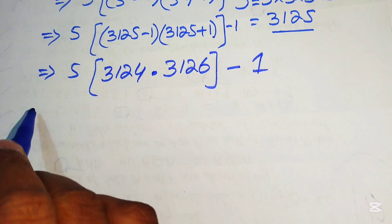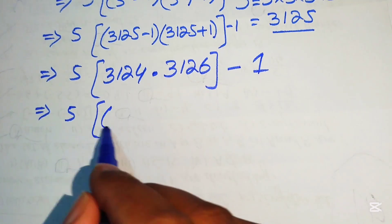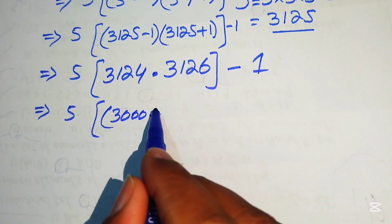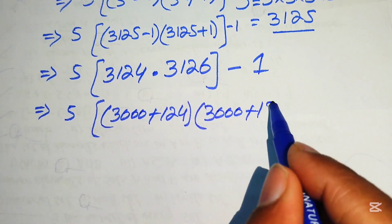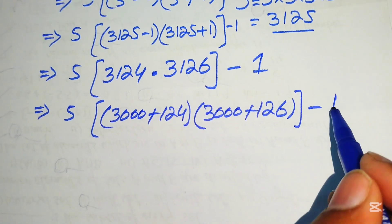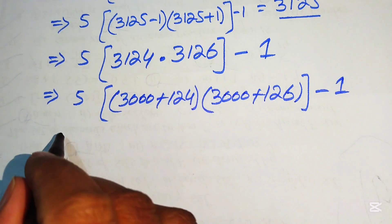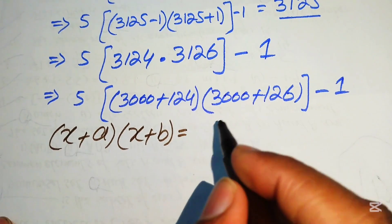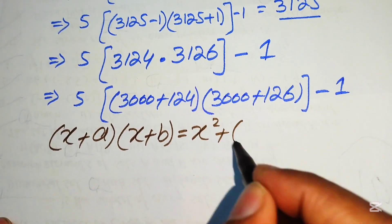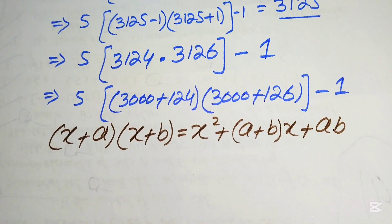To multiply the two larger numbers 3124 and 3126, we use a nice formula. We write 3124 as 3000 plus 124 and 3126 as 3000 plus 126 minus 1. Then we apply the formula: x plus a times x plus b equals x squared plus a plus b times x plus a times b.